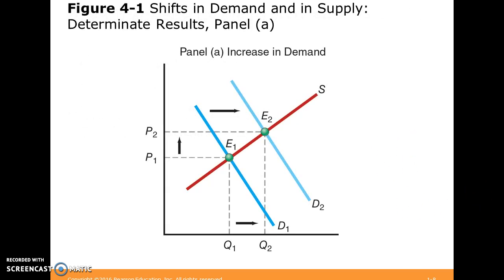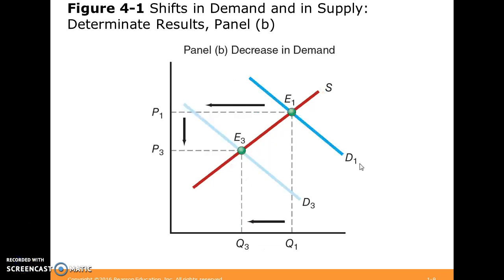So here's what we're going to think about: where we have some sort of demand shift — something has happened where demand has increased. That is, the curve D1 has increased outward or to the right to D2. You can see what would happen where you'd move from equilibrium 1 to equilibrium 2. Similarly, we have an example of a decrease in demand — we are at D1 and we move in or to the left to D3. Our equilibrium goes from E1 to E3.